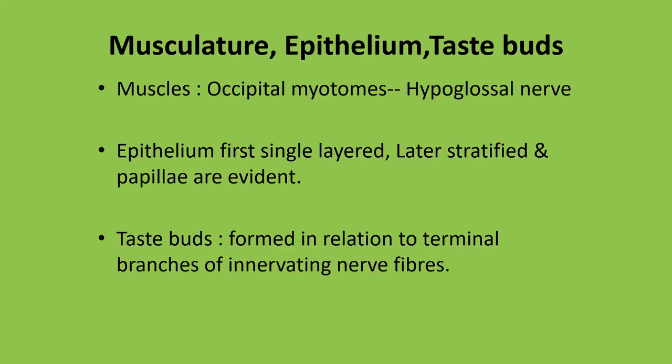The muscles of the tongue are derived from occipital myotomes. These occipital myotomes migrate to the region of the developing tongue, and the nerve supply of the occipital myotomes is the hypoglossal nerve. Therefore, the nerve supply of the muscles of the tongue is the hypoglossal nerve. The epithelium of the tongue is first single-layered, later it becomes stratified and the papillae are evident. The taste buds are formed in relation to terminal branches of the innervating nerve fibers.